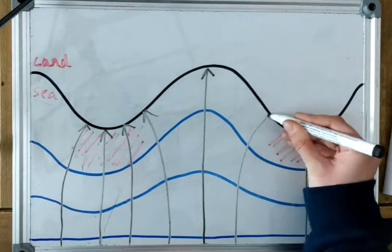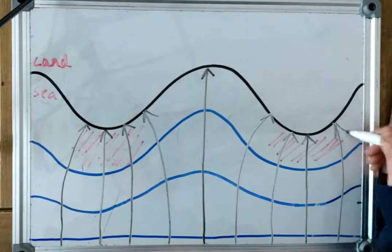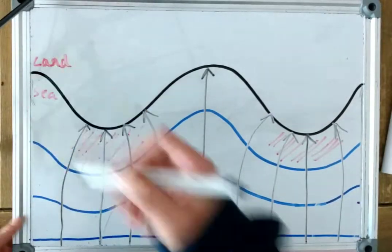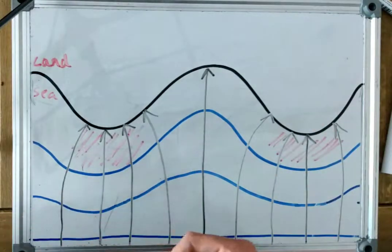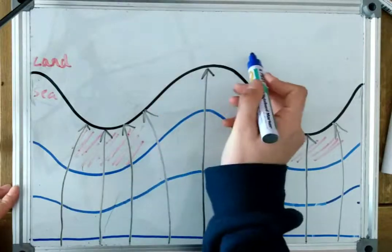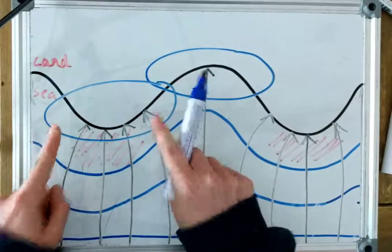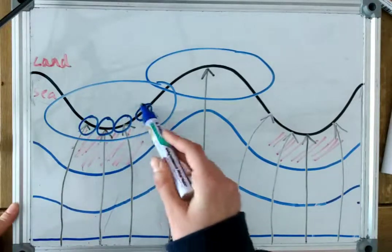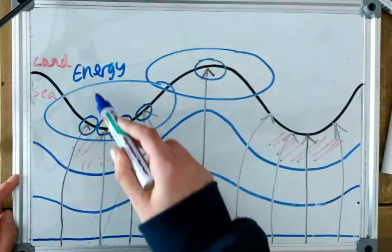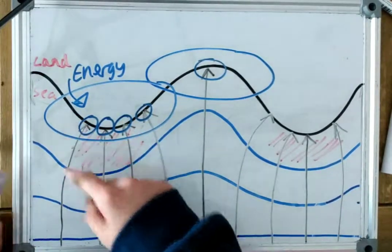They're at roughly equal distances from each other. Technically it's one big wave front, but each of the ones we've drawn are at roughly equal distances. We've got the same area of bay and the same area of headland. However, the headland has four waves breaking on it while the bay only has one wave breaking on it. This means that the energy is concentrated along the headland, so there will be more erosion at the headland.